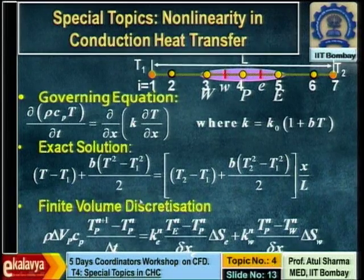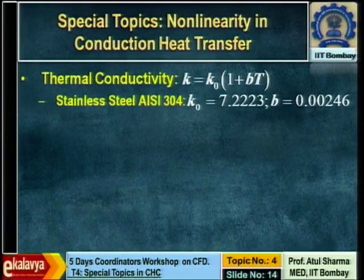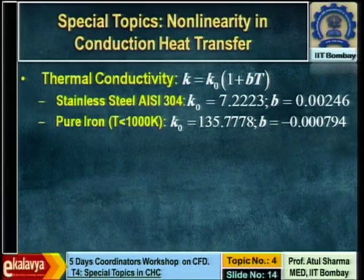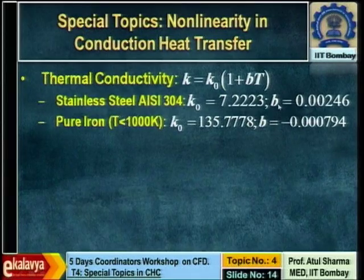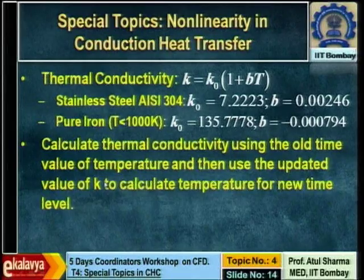The finite volume discretization gives the unsteady term and diffusion term as before. For reference, the thermal conductivity data: for stainless steel, k_0 and b have specific values with b positive; for pure iron below 1000 K, b is negative, though both values of b are very small. The solution algorithm procedure is the same as discussed earlier, except that after each time step the conductivity at each grid point changes because k is a function of temperature.